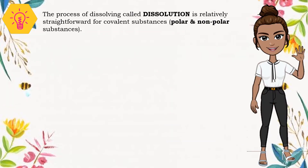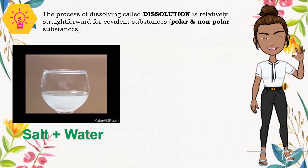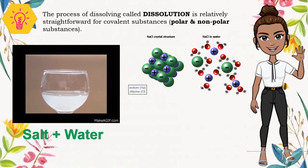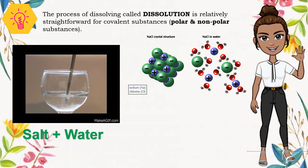The process of dissolving, called dissolution, is relatively straightforward for covalent substances with polar and non-polar substances. Solubility is greatly affected by the molecule's polarity. Since polar molecules have partially positive and partially negative portions, they will interact with another molecule following the law of electrostatic attraction or repulsion. For example, in preparing a solution of water, which is a polar molecule, and salt, which is an ionic substance with positive and negative ions, the molecules and ions will interact with each other.